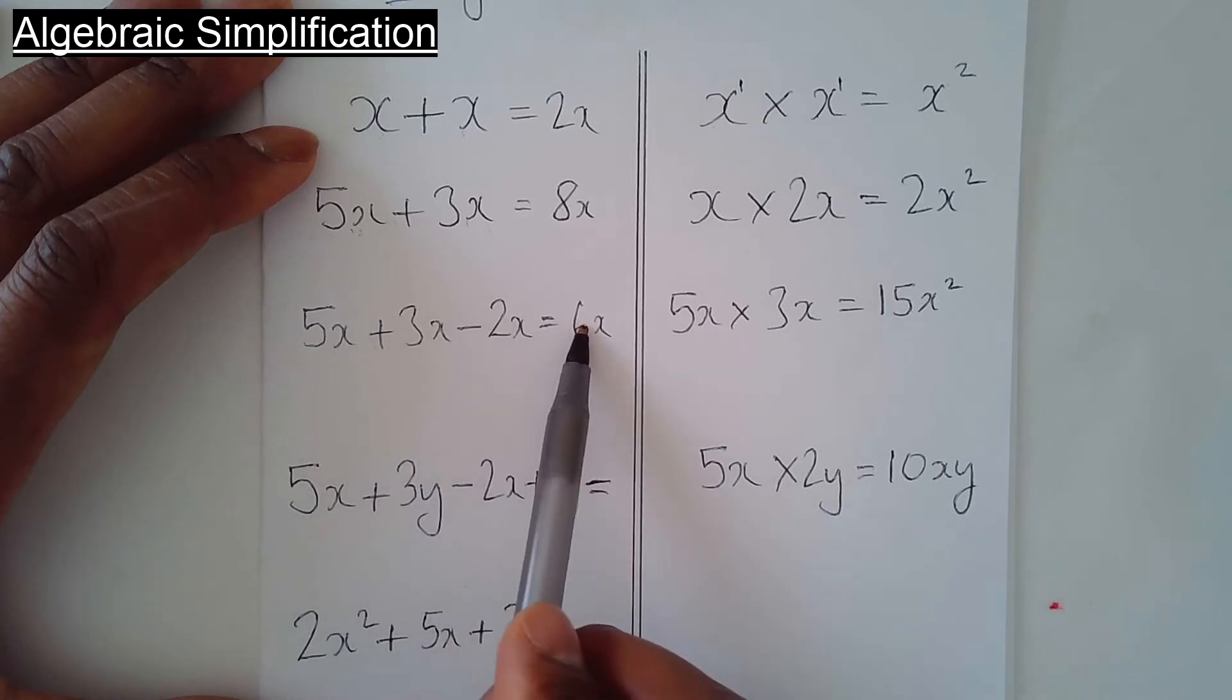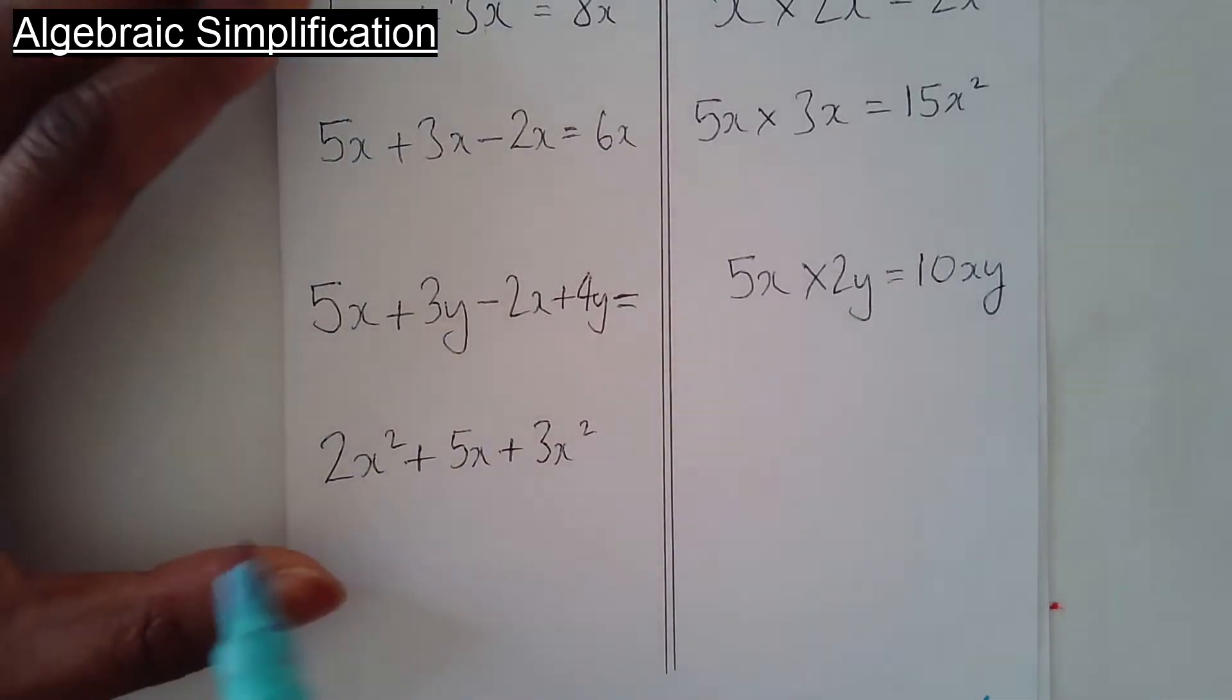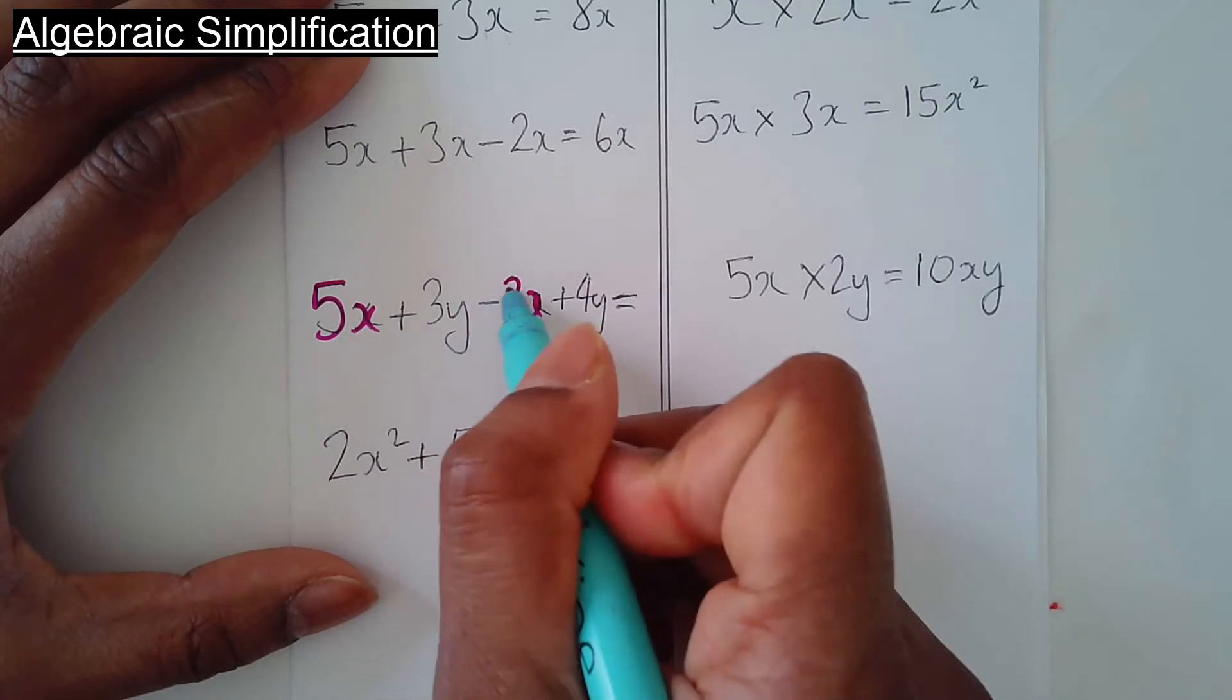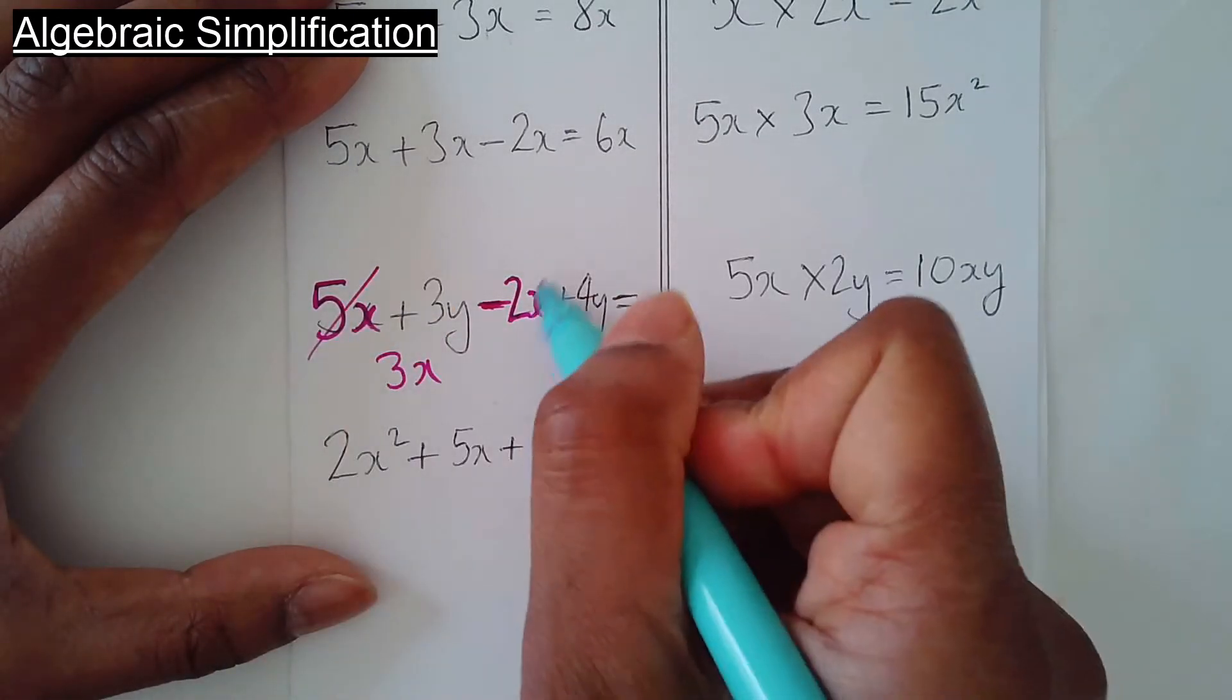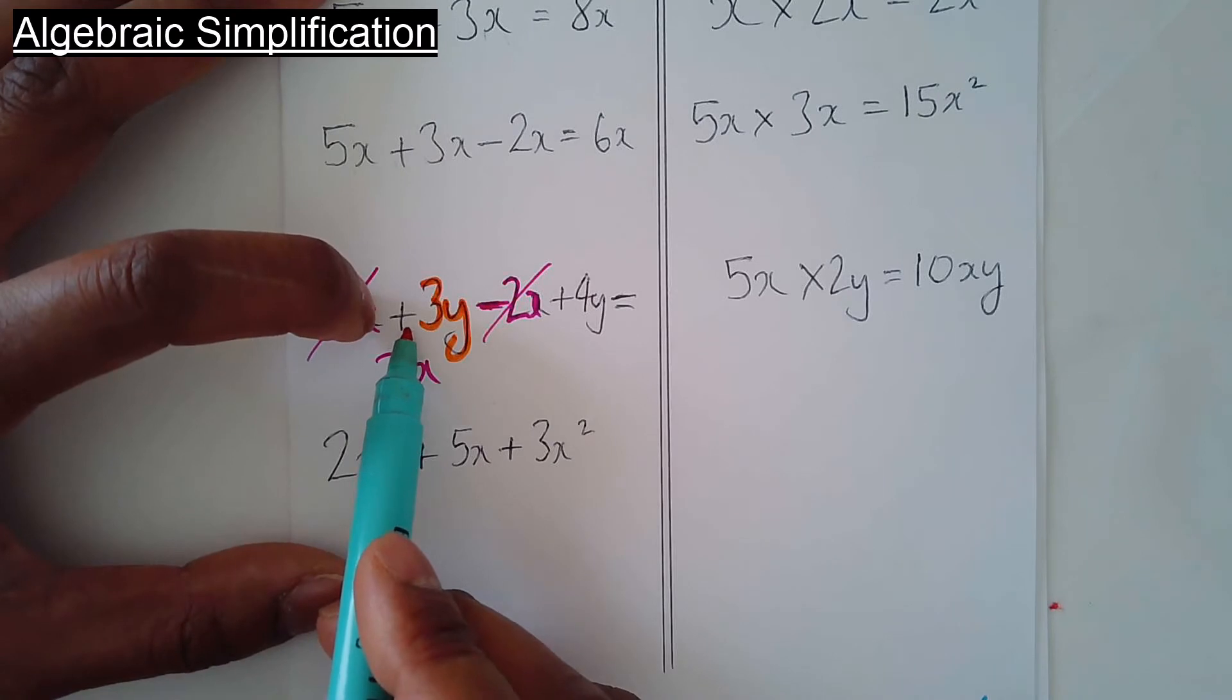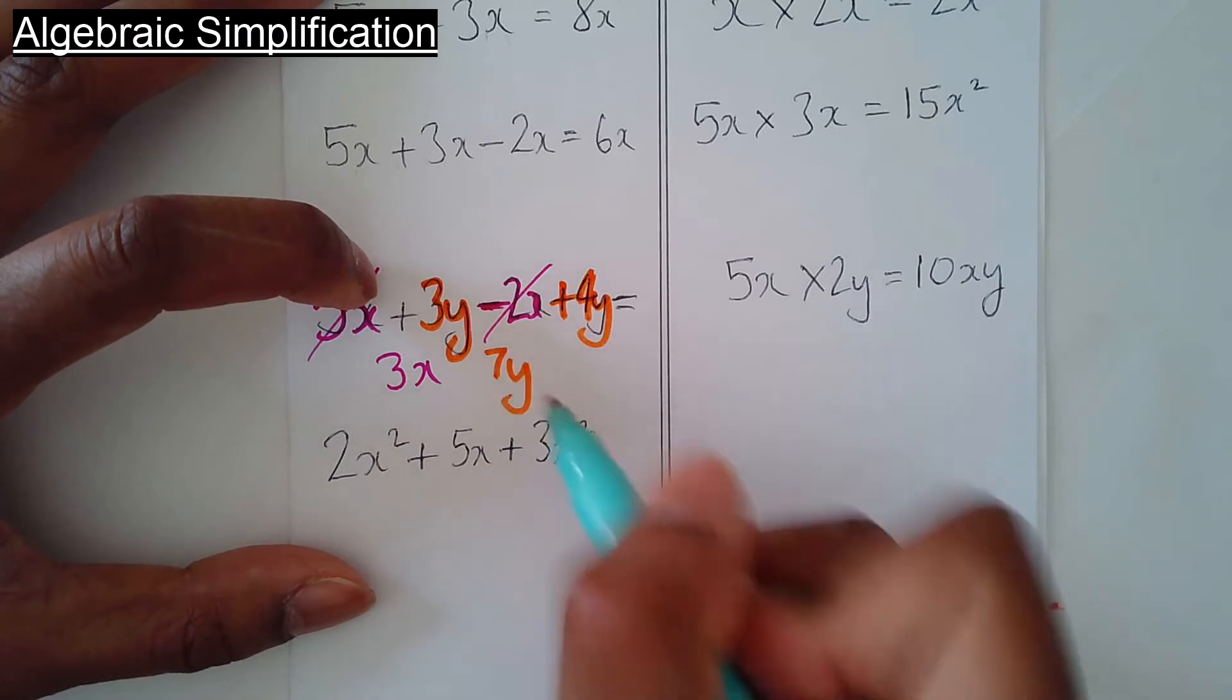Now we've got two different groups, two different letters, so let me group them up. You've got the 5x and the 2x there, but the operator in front of the number is important. So really what you should do is 5x take away 2x, not 5x add 2x. Clearly it says minus in front of it. So 5x take away 2x is 3x. Now deal with the y. You've got the 3y, and it's positive because there's a positive operator in front of it. So 3y add 4y makes 7y.